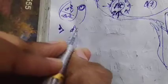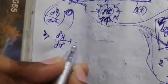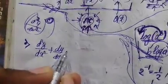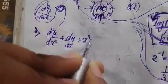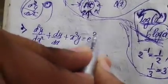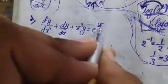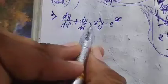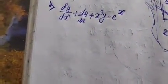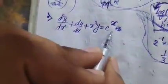The differential equation is: d²y/dx² + dy/dx + x³·y = eˣ. Now you have to figure out whether this differential equation is linear or non-linear. Since we have this exponential eˣ, this is behaving as a non-linear term.